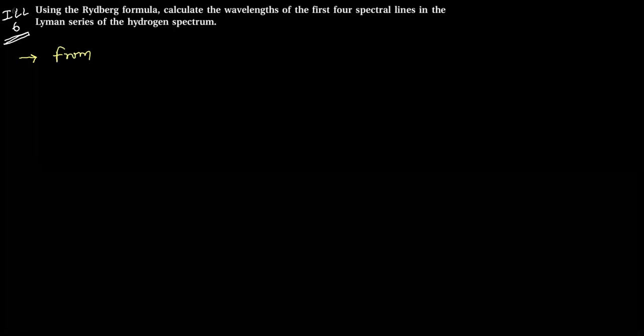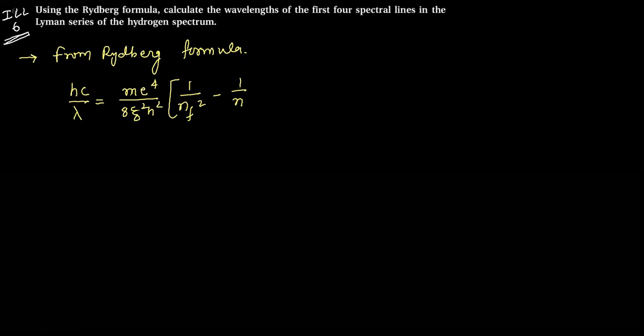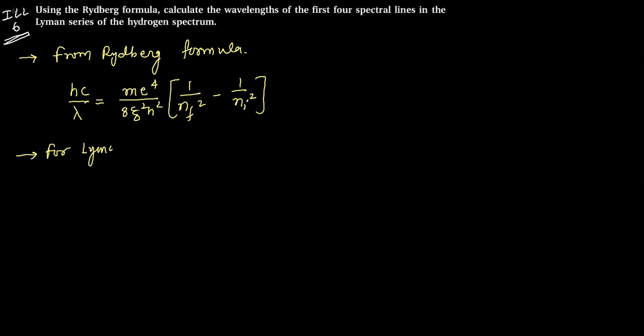From Rydberg formula, we have hc divided by lambda equals m raised to 4 divided by 8 epsilon 0 square h square, one divided by n final minus one divided by n initial square. For Lyman series, hc divided by lambda equals, for Lyman series n final is one.